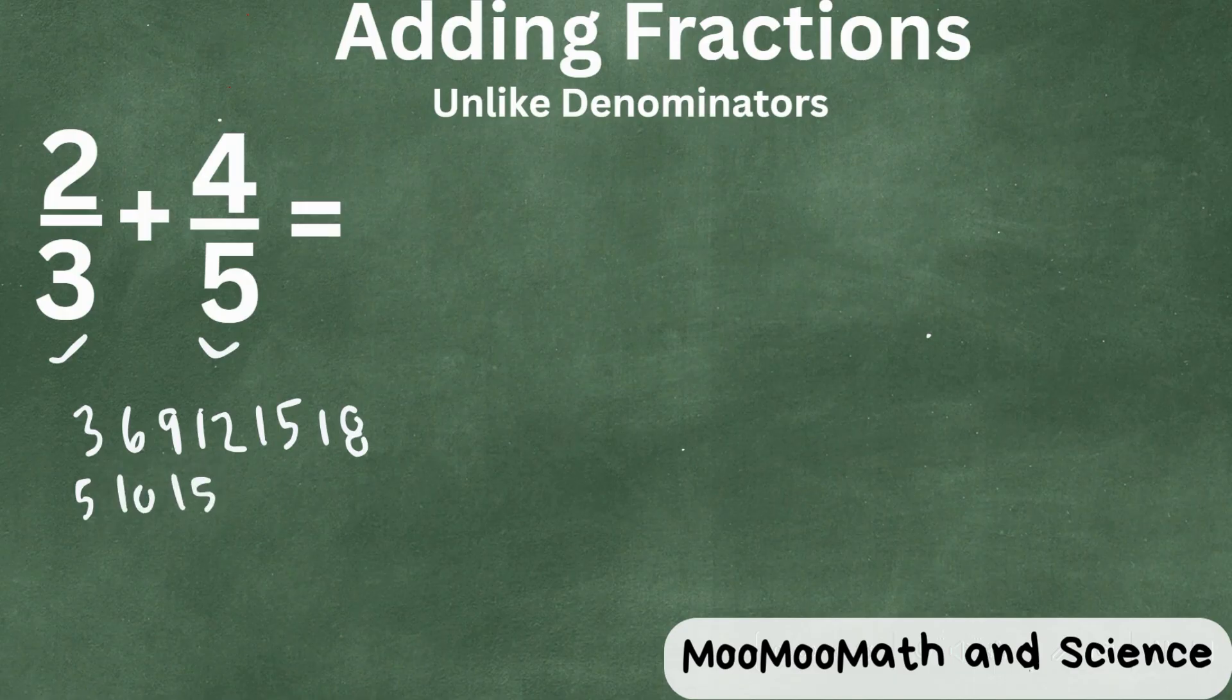Well, notice that we have the same number, fifteen. It's the lowest common denominator. Another way that you could do this, you can create a factor tree.